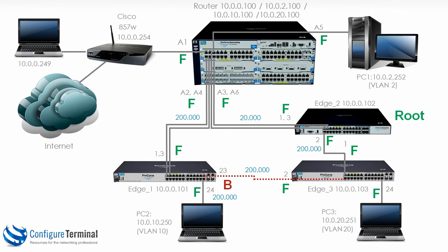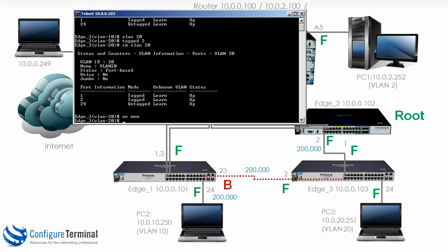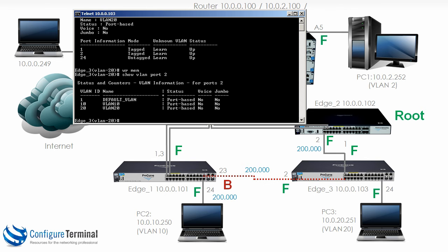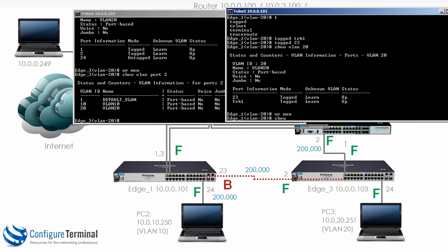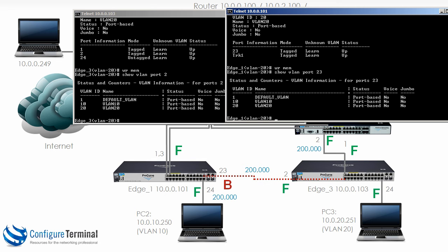Basically what we've done is allowed VLAN 1, 10 and 20 across this link between edge 1 and edge 3. On edge 3, typing show VLAN port 2, you can see VLAN 1, 10 and 20 have been configured on port 2. By the same token on edge 1, show VLAN port 23 shows VLAN 1, 10 and 20 have been configured on that port.